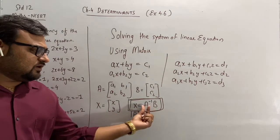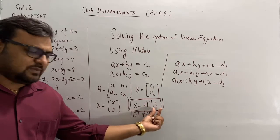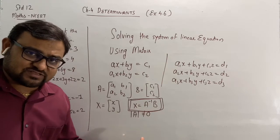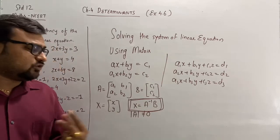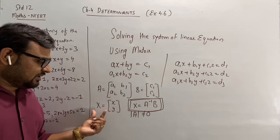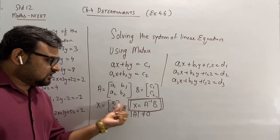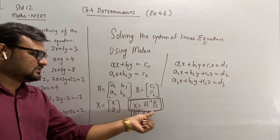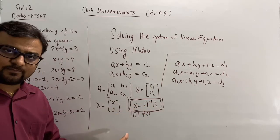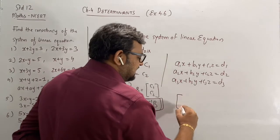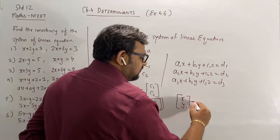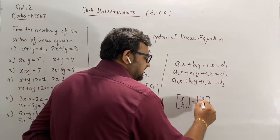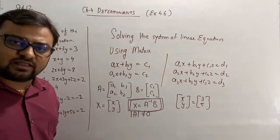When you find out A inverse and multiply by B, you will get a matrix which consists of one column and two rows in this case. And that will be equal to X. So just relate the corresponding elements of this matrix to x and y. Means, if you get x, y equal to 3, 5, that means the value of x is 3 and value of y is 5.